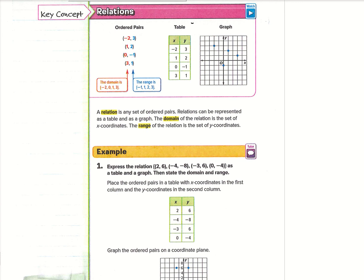We've got a table and a graph. These are other ways of representing ordered pairs as well, or relations as well. So really any of these are relations.